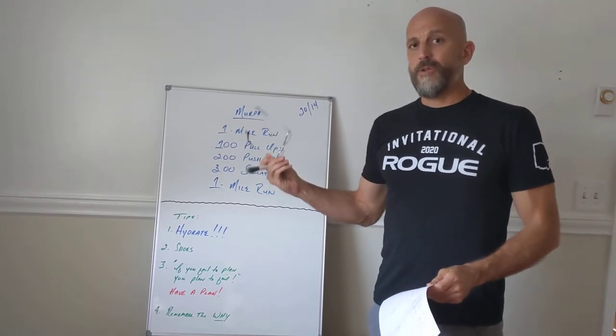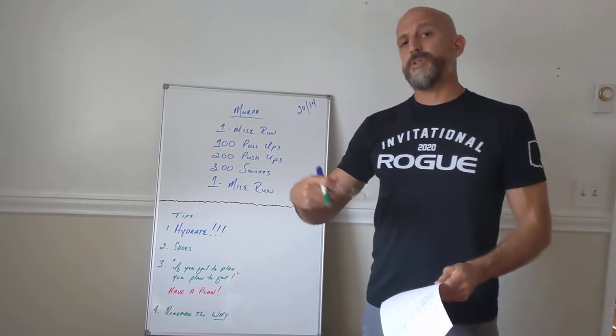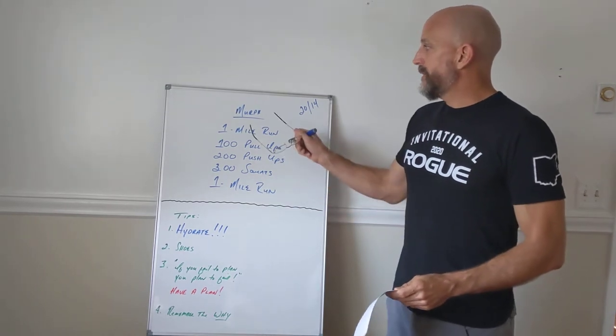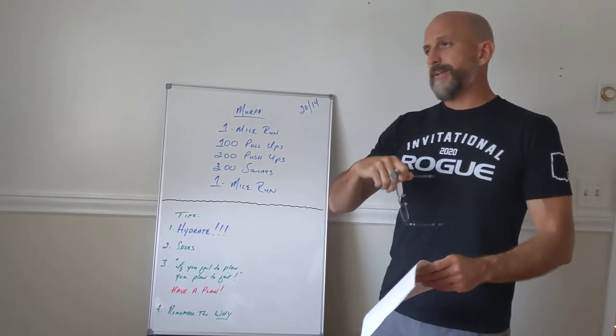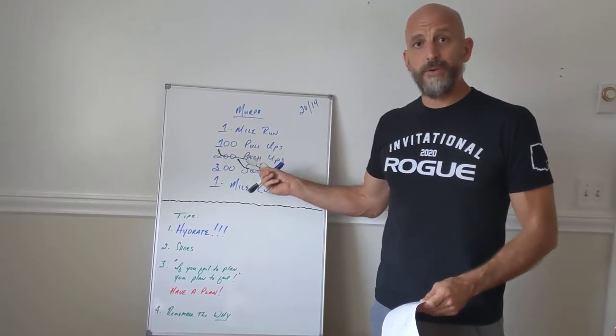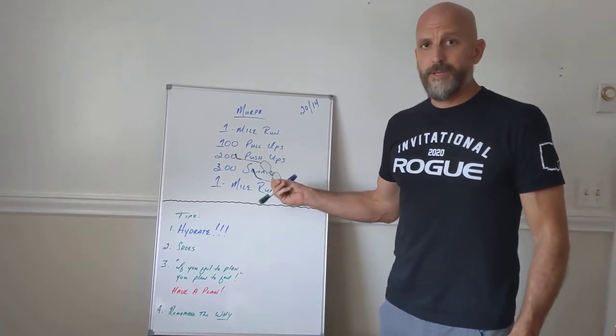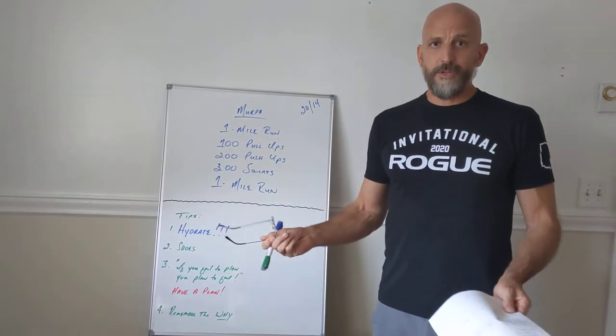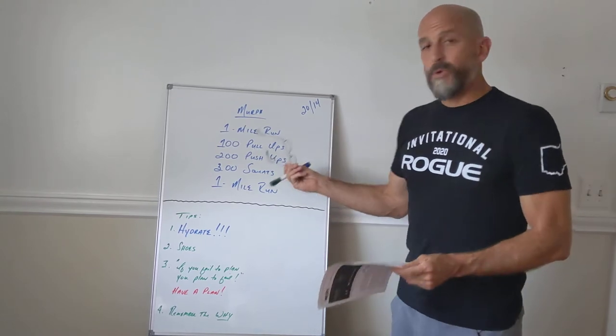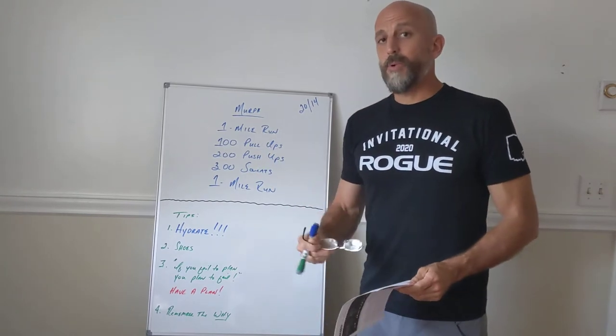This particular workout called Murph is traditionally done on Memorial Day. We chose to do it on Labor Day. Ashley and Casey chose to do it on Labor Day because of COVID and the way the world is now, none of us have been doing pull-ups when Memorial Day rolled around. So looking out for our best interest and for our safety, they decided to push it back to September. And as you know, we've all been doing pull-ups and toes-to-bar and ring rows since that time, so we're ready. And that's why they chose to do it for Labor Day. But traditionally, Murph is done on Memorial Day.